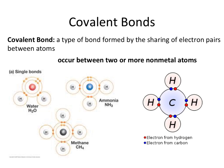In this video, we're going to be talking about the specifics of covalent bonding. Covalent bonding is characterized by the sharing of electron pairs between atoms, and it usually occurs between two or more nonmetals. However, metalloids and nonmetals can also form covalent bonds. As you can see from our pictures here, hydrogen and carbon are sharing pairs of electrons to satisfy the octet needs of each.